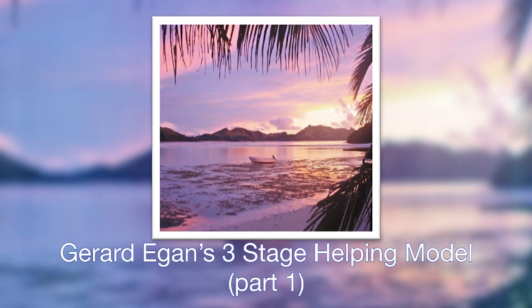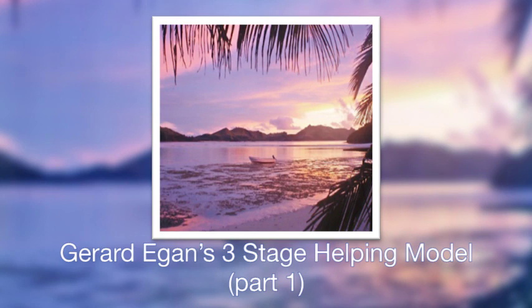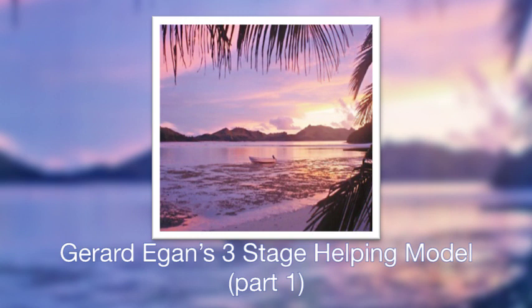We're only looking at stage one, so the question is: what is going on? Stage one is about providing a safe place for the speaker — that is, the person in distress — to tell their story in their own way and to be fully heard and acknowledged. It is about a space where a person can hear and understand their own story as it is spoken out loud.